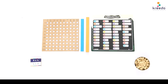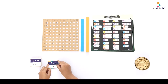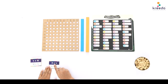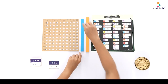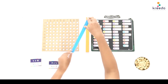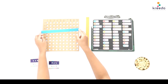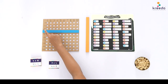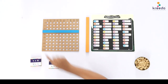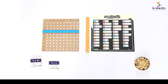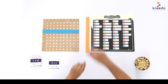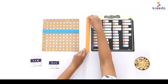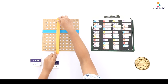Tell the child: let us pick a multiplication card and read the fact — 3 times 4. Place the blue strip horizontally below the number 3. Point to the number 3 on both the card and the board and say 3.